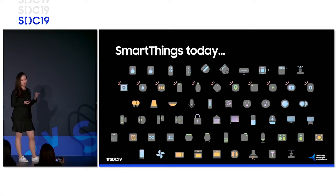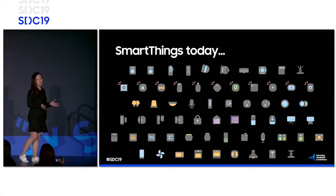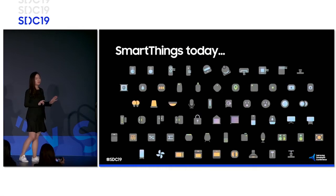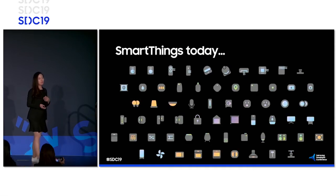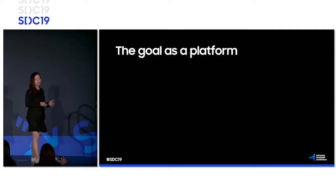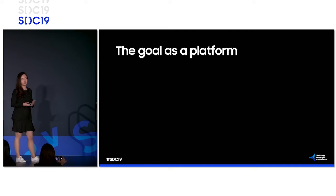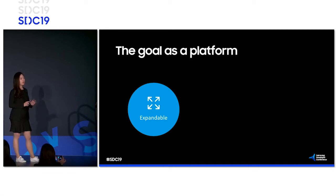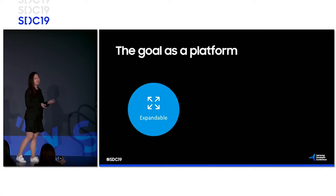SmartThings is used by over 45 million users worldwide today and is a host to over 400 different device types — not just based on models or brands, but literally device types. And the number of devices that can be added to SmartThings is only growing. We have an amazing group of great minds worldwide who have been working on this project, which is why we had to set a few common goals — a unified philosophy. First, we needed the platform to be very expandable, making it easy for OEMs to add their devices to our system.